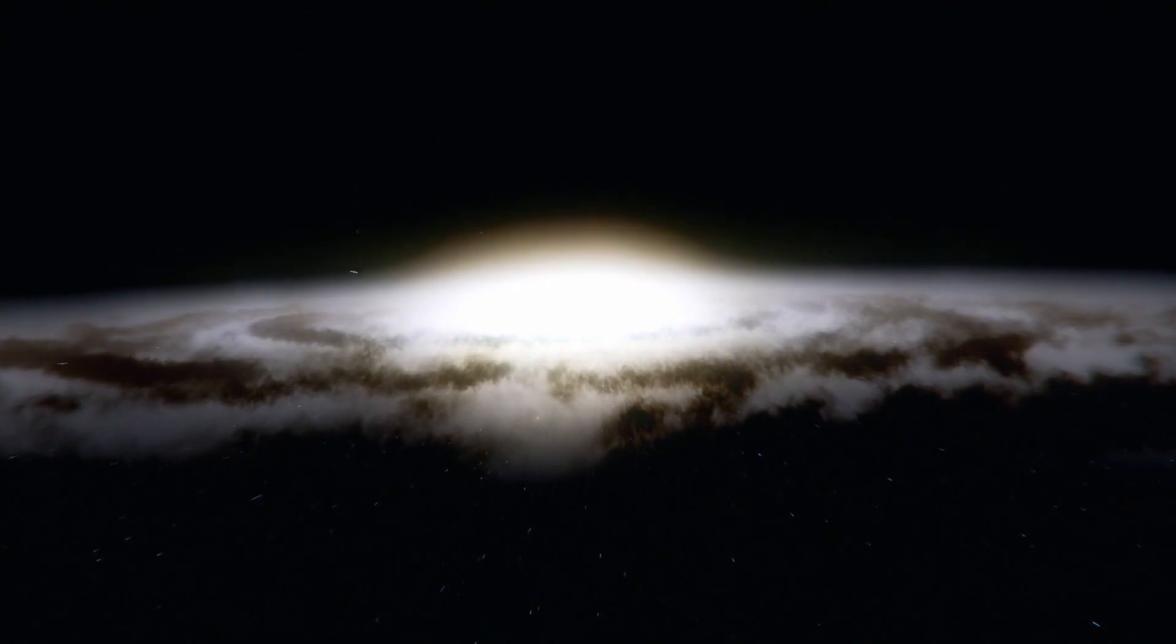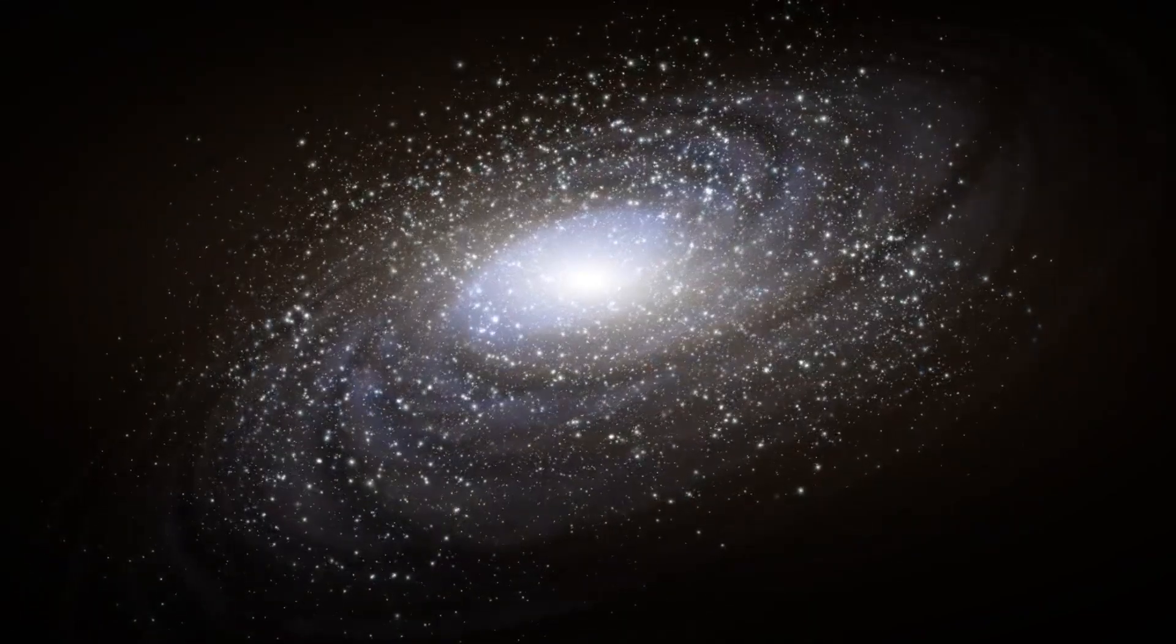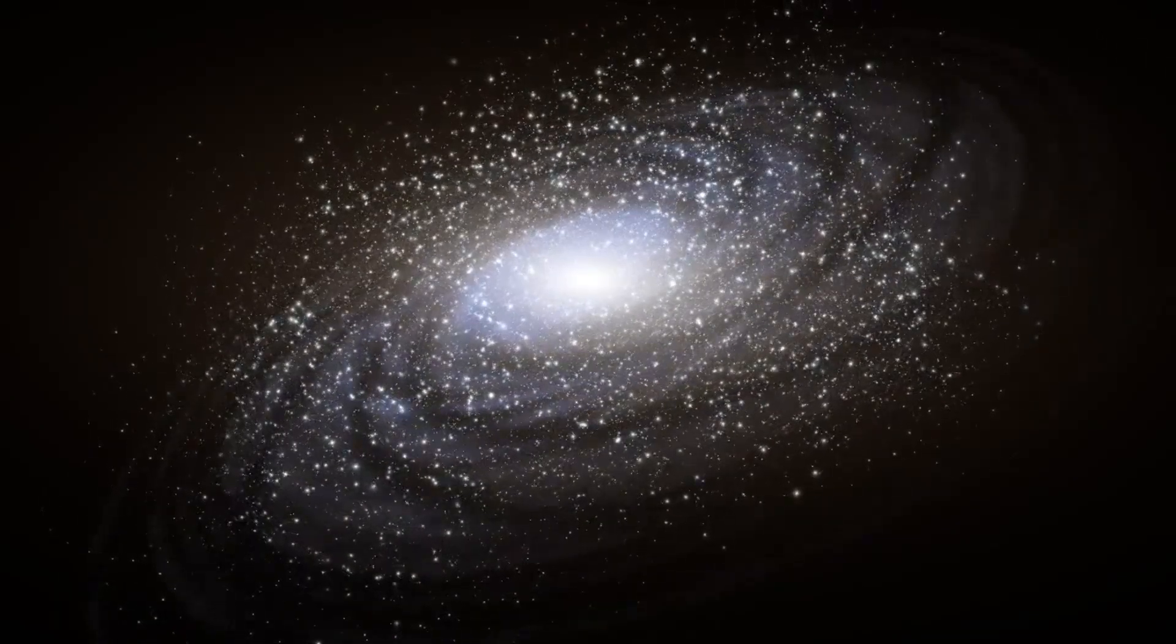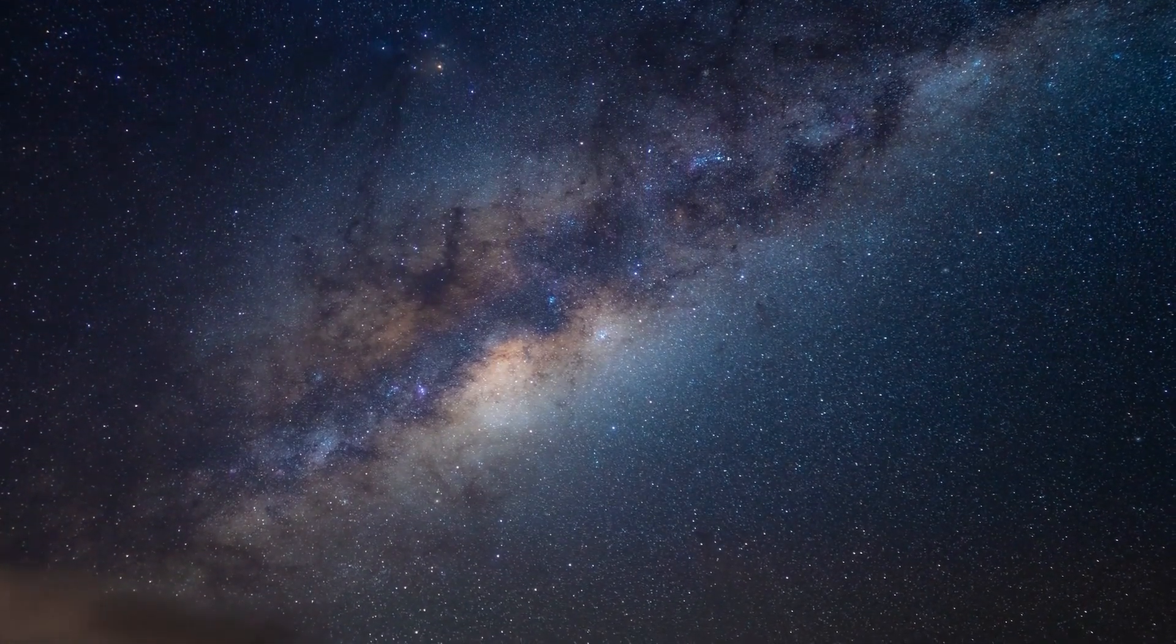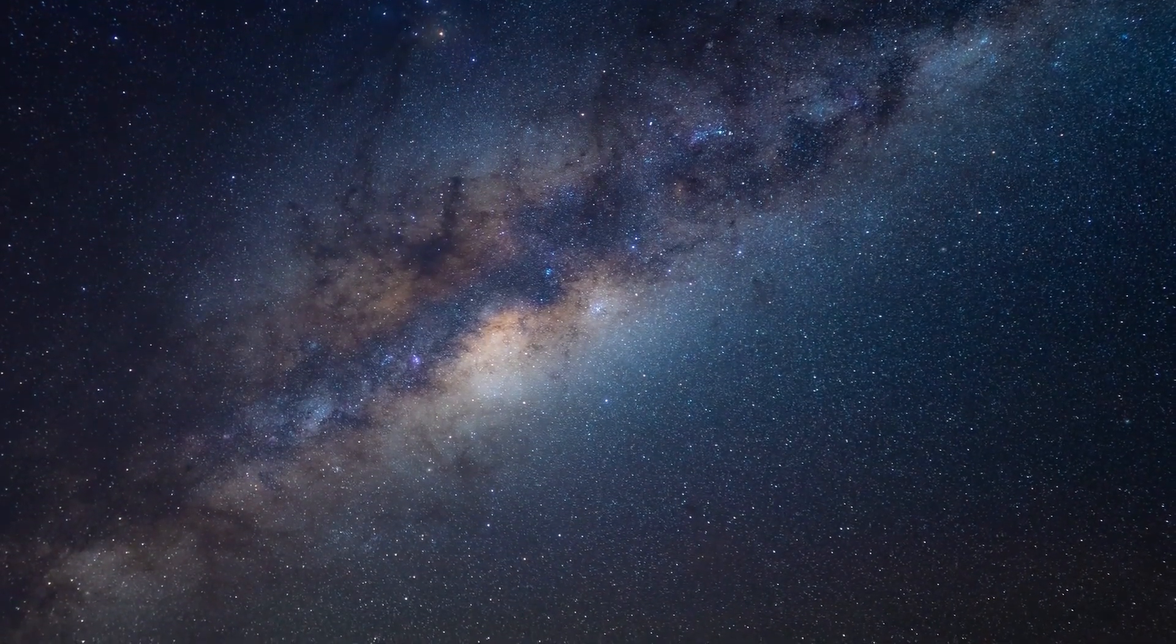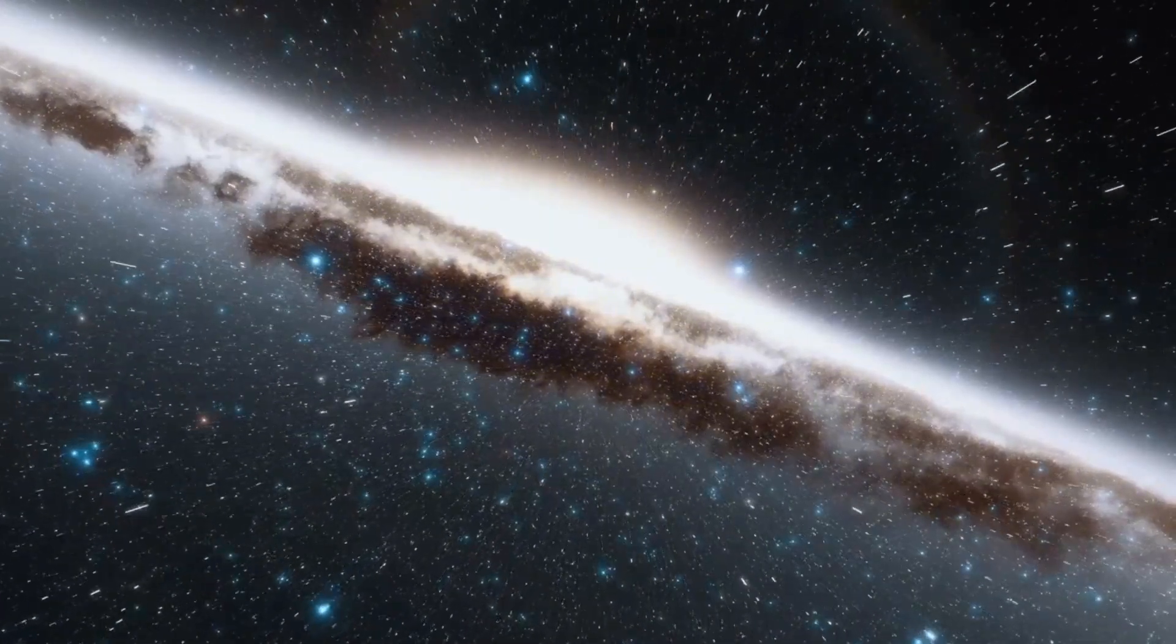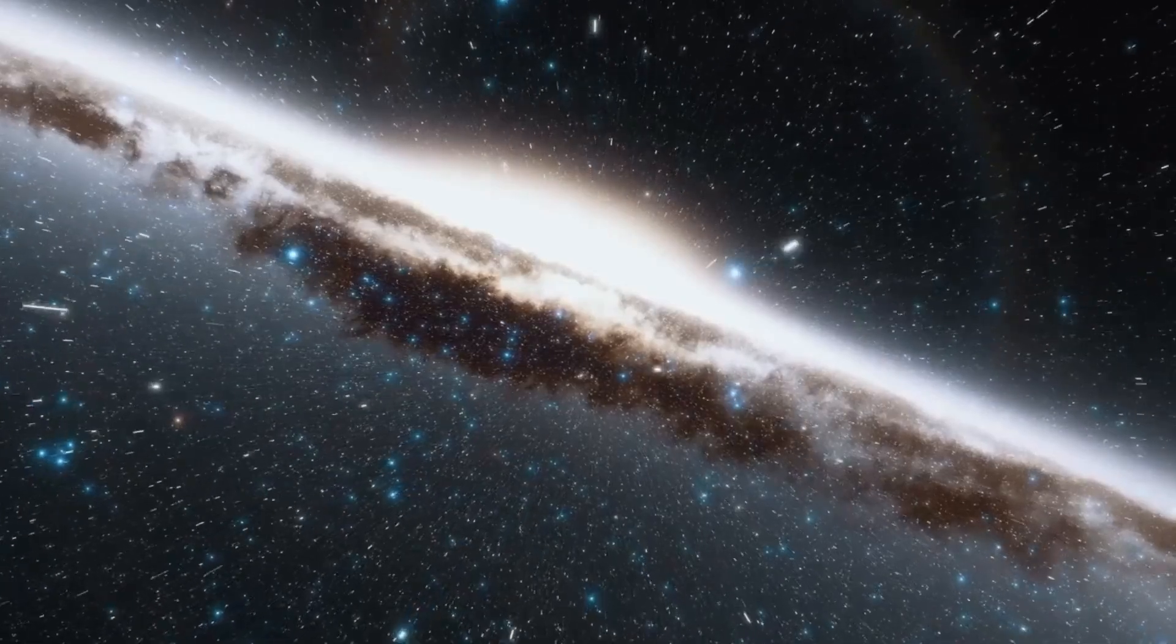But why does this red giant matter so much to us? Well, Betelgeuse stands out not only for its brightness, but also for its history and significance in human culture. Named after the Arabic term Yad Alza, which means the hand of Orion, Betelgeuse has been observed and documented by ancient civilizations for centuries. It has been a guide for travelers and a point of wonder for stargazers, with its reddish hue distinguishing it from other stars in the Orion constellation.